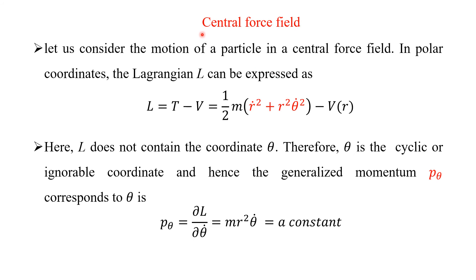We will see the application of a cyclic coordinate in the case of the central force field. Let us consider the motion of a particle in a central force field. In polar coordinates, the Lagrangian L can be expressed as L equals T minus V, where T equals one-half m times r-dot squared plus r squared theta-dot squared. This expresses the velocity squared in terms of r and theta. Minus V of r — the potential depends only on coordinate r, not on velocity.